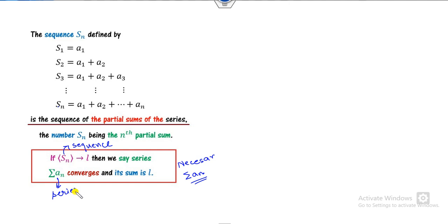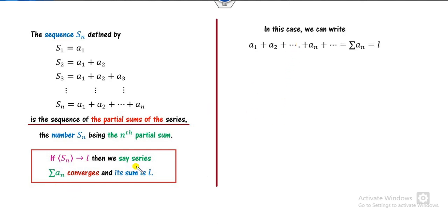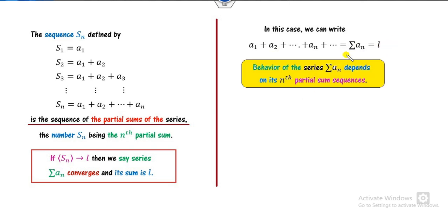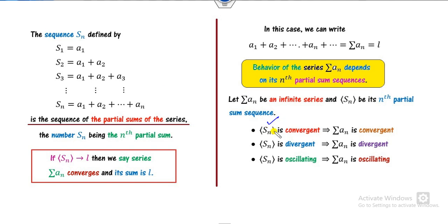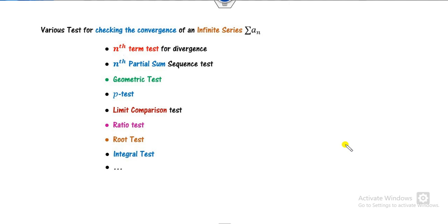Remember, this is the sequence and this is the series. Once you prove convergence, you can write the infinite sum from 1 to infinity, and it converges to L. The behavior of the series is totally dependent on the nth partial sum sequence S_n. If you prove the partial sum sequence is convergent, the series is convergent. If it is divergent, the series is divergent; if oscillating, it is oscillating.